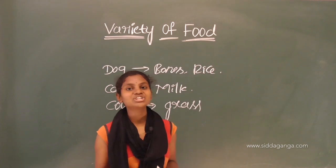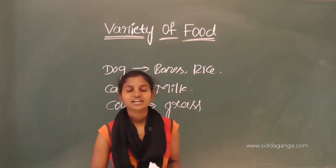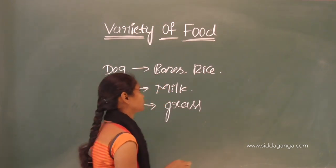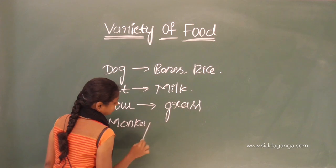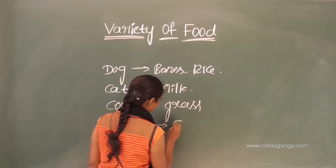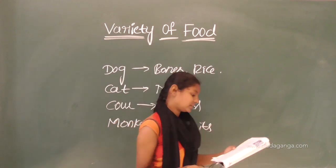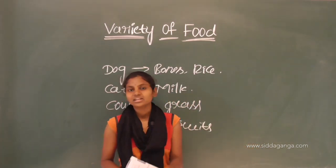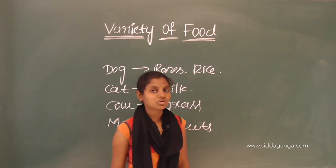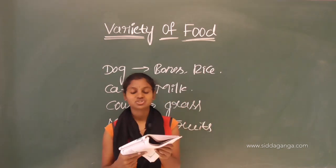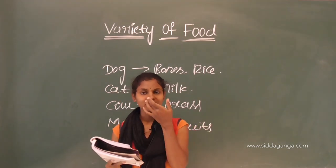Next is monkey. Monkey can eat fruits and vegetables. Monkeys always eat bananas and different types of fruits. Next is hen. Hen can eat small insects and grains. Bandicoot also eats fruits and vegetables.